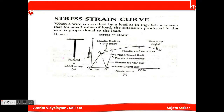For the stress and strain curve: when a wire is stretched by a load — the load is m into g — it is seen that for small values of load, the extension produced in the wire is proportional to the load. In this graph, this axis is strain and this axis is stress, and this is the elastic limit point.